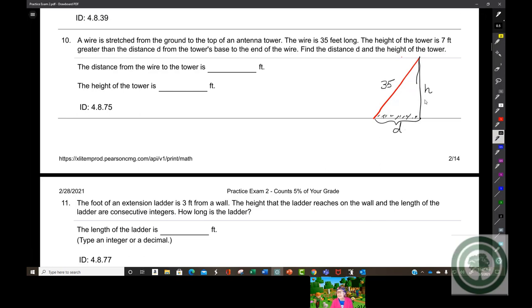Meanwhile this is h, the height. So we have d and h, and this is 35 feet. Since this is a right triangle, the tower is seven feet greater than the distance, so h equals d plus seven.